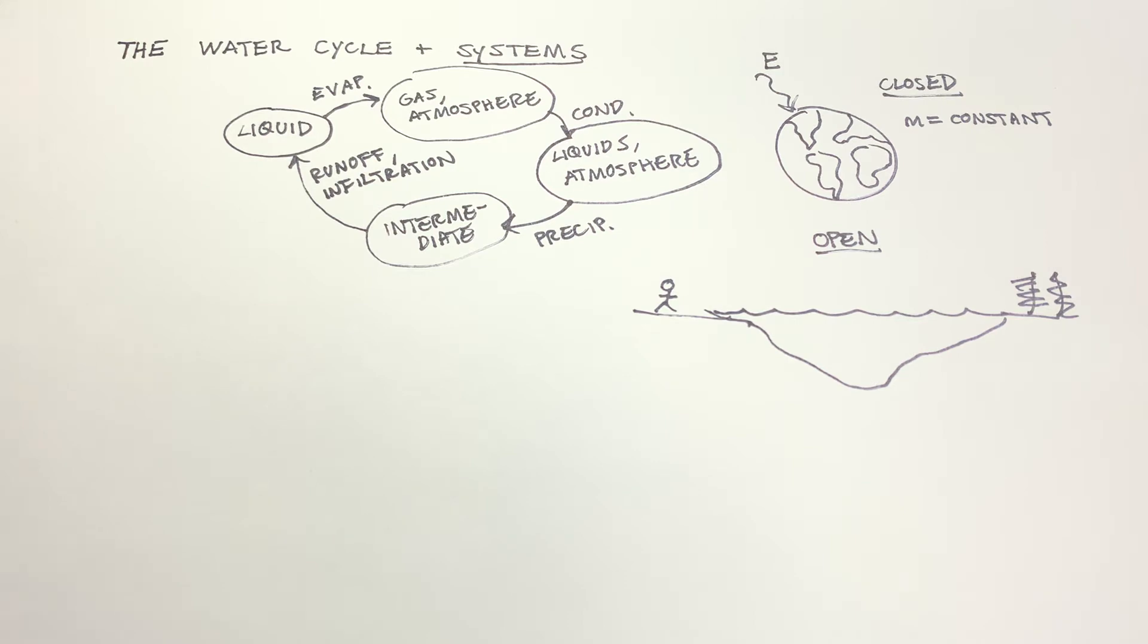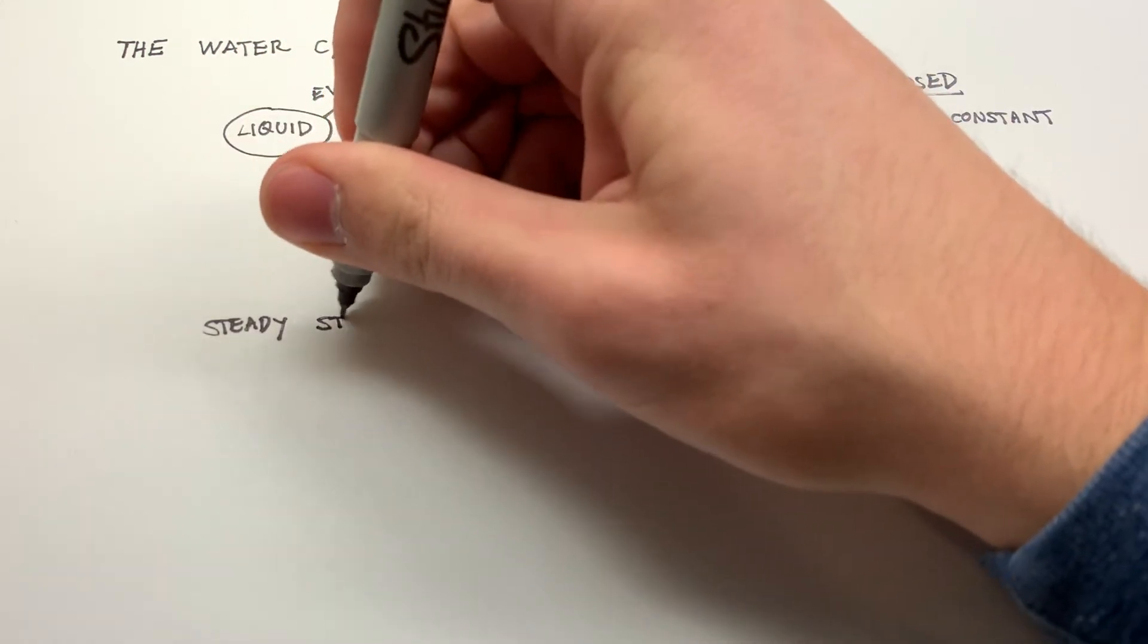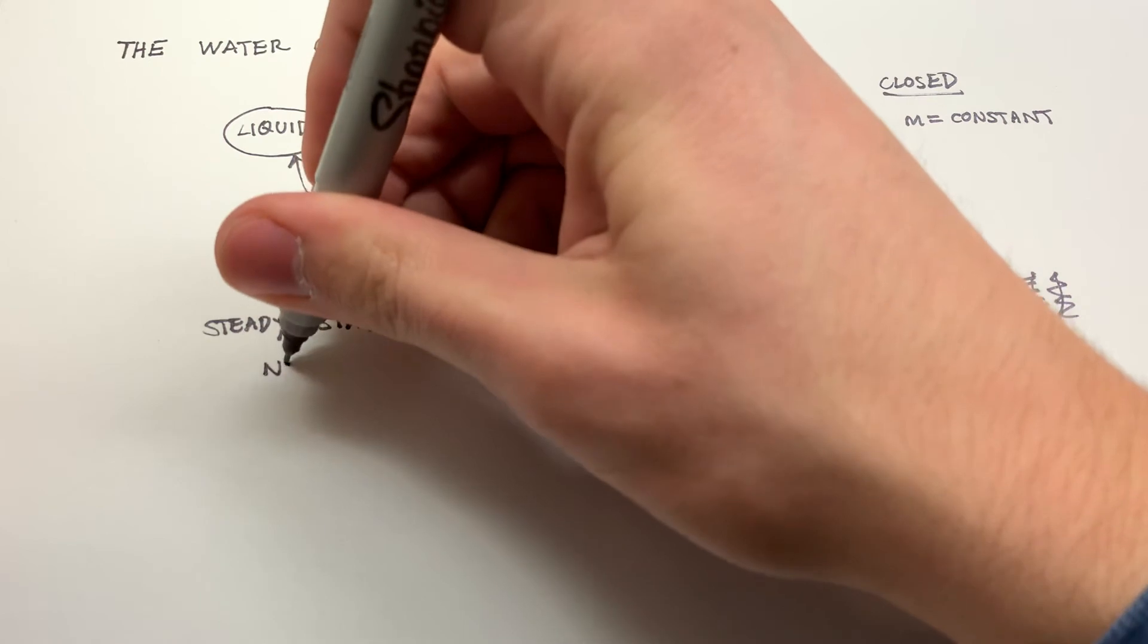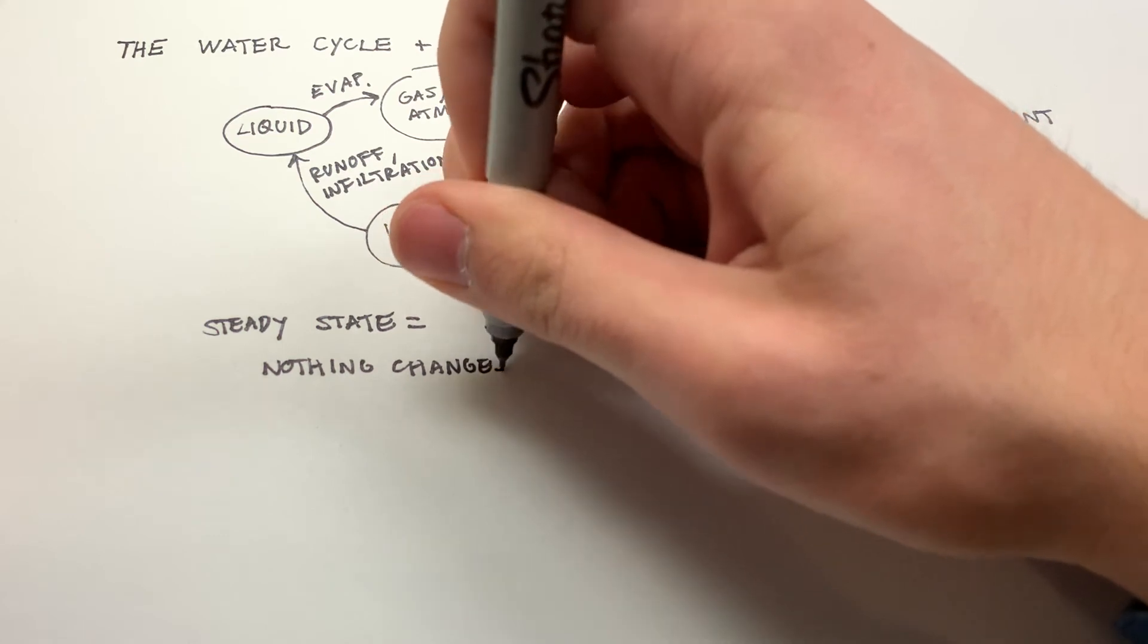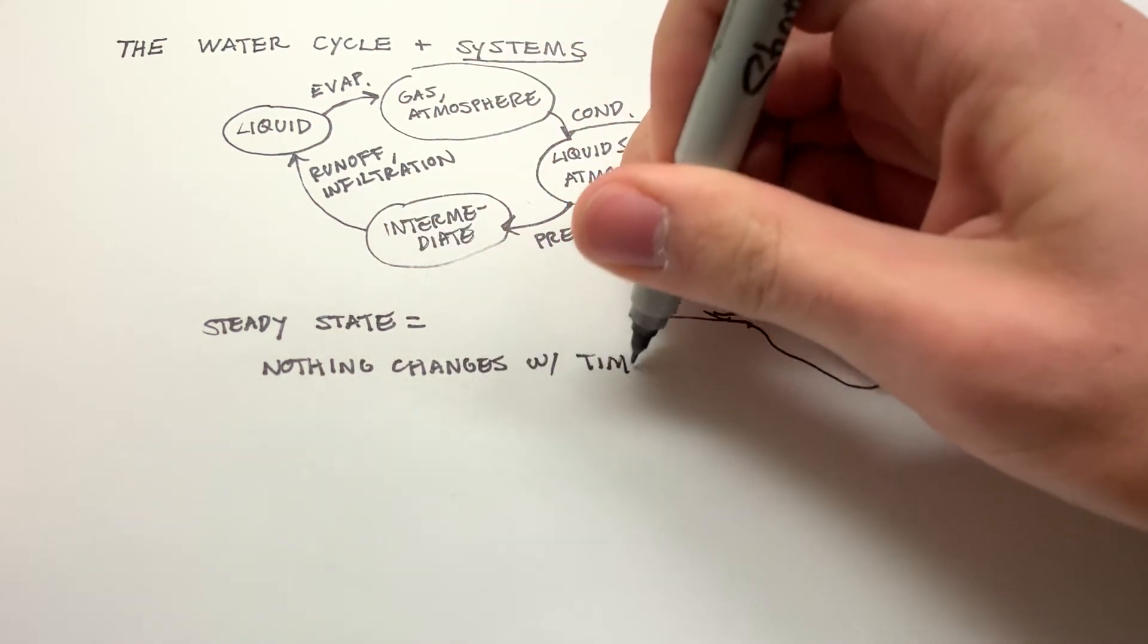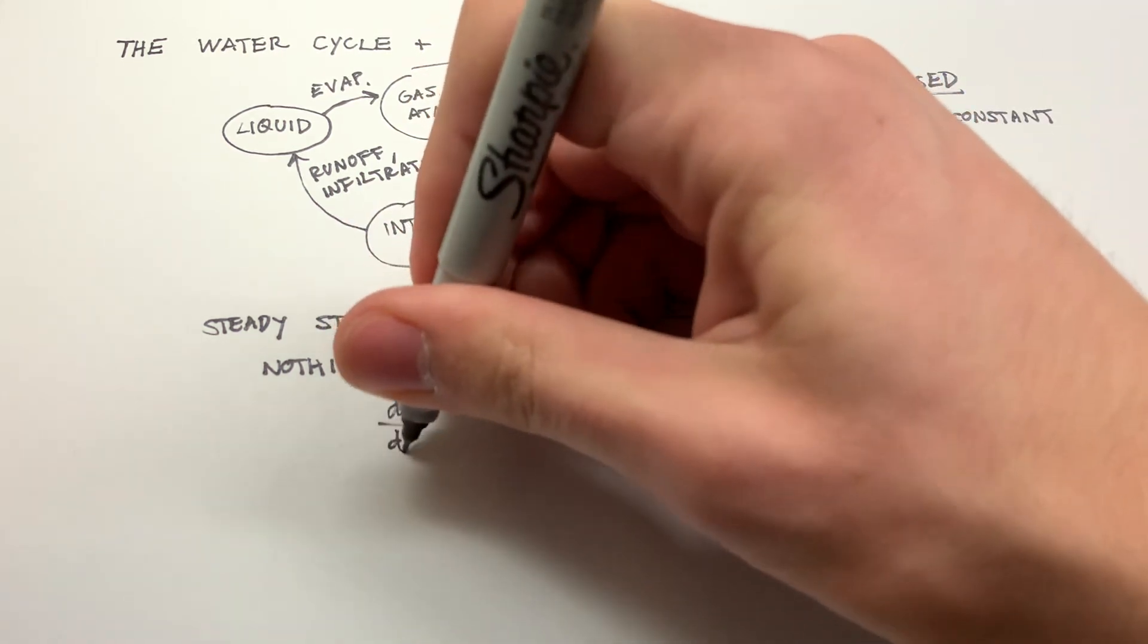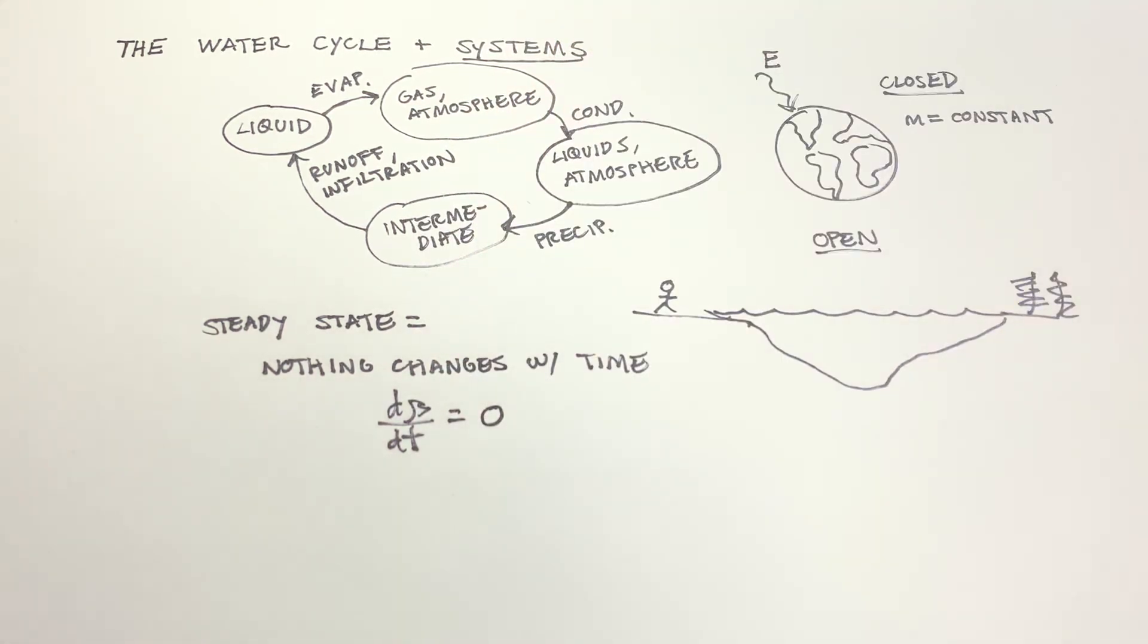And when we talk about water with open systems, another important distinction to make is steady versus unsteady state. Steady versus unsteady state systems come up a lot in engineering applications, but in earth science as well. Steady state means that nothing changes with time. For the more mathematically inclined, this means that d beta dt is zero. This is whatever property we're looking at. Something is not changing with time.